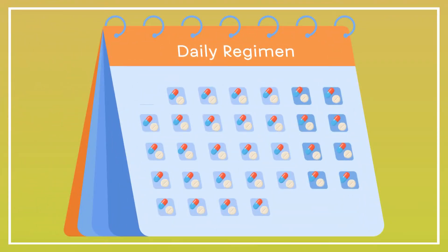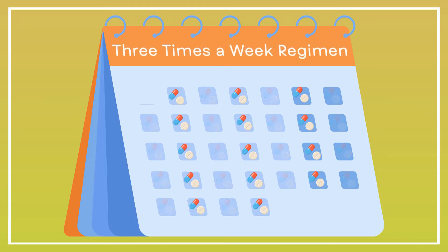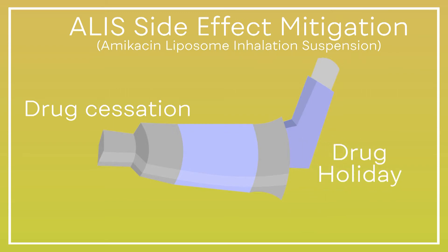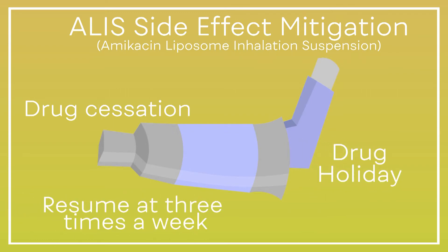Mitigating side effects can be achieved by reducing drug frequency from a daily regimen to a three times a week regimen, which can often improve tolerability. In the case of ALIS, side effects can often be mitigated by cessation of the drug — a drug holiday — and resuming at a reduced frequency of three times a week instead of daily.